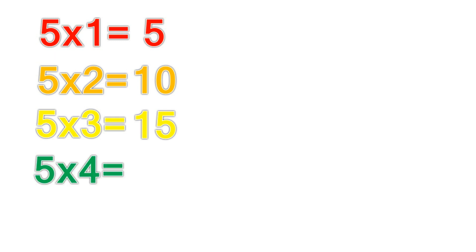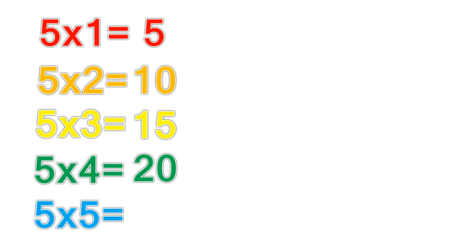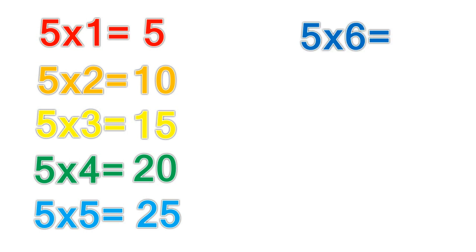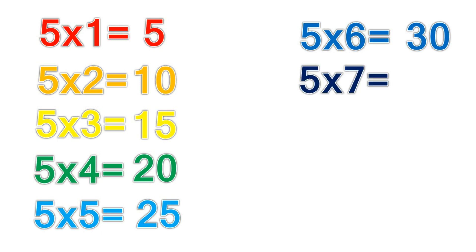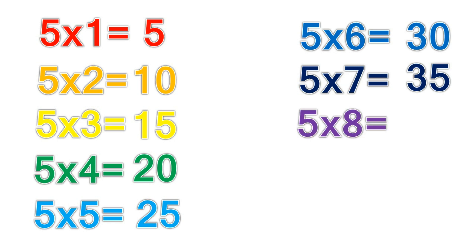5 times 4 equals 20. 5 times 5 equals 25. 5 times 6 equals 30. 5 times 7 equals 35.